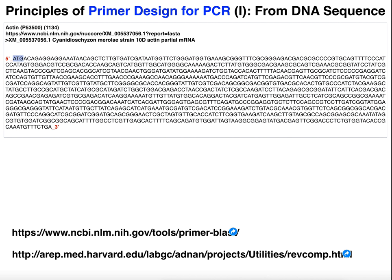Also, the first three-nucleotide triplet here is ATG. This is actually the triplet code for methionine. If we imagine the mRNA from this, it would be AUG — that's our start codon. Down here on the three-prime end, we have the nucleotide triplet TGA, which as a codon in mRNA would be UGA, which is a stop codon. So this is the entire gene sequence for actin.